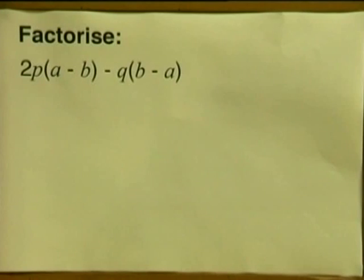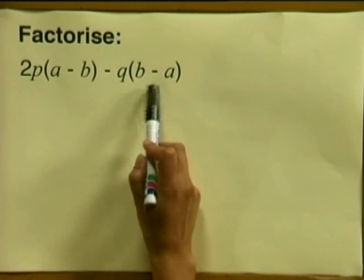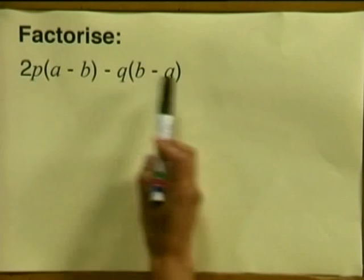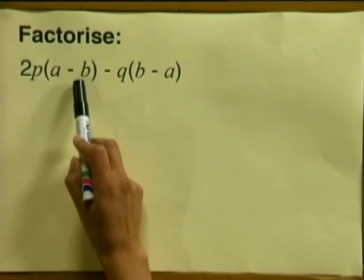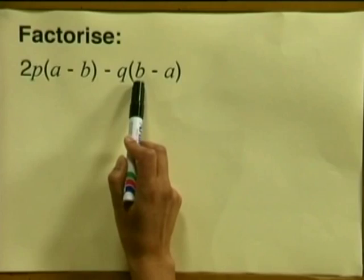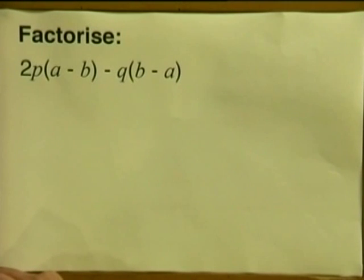But they are nearly the same. Do you know why I say nearly? Because the terms in the brackets simply have different signs. This is a positive a, this is a minus a, this is a minus b, this is a positive b. So I can use the method we've just learned — changing the sign.